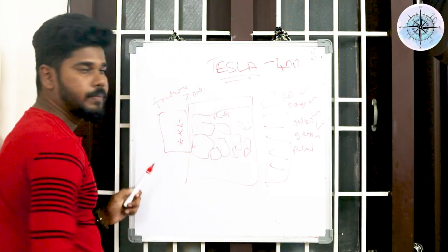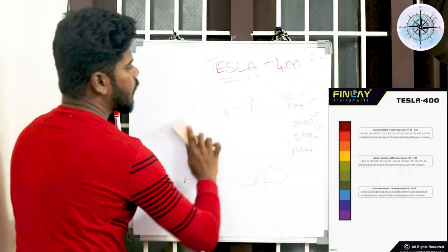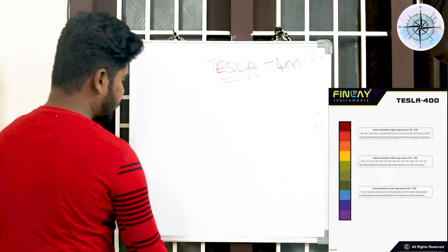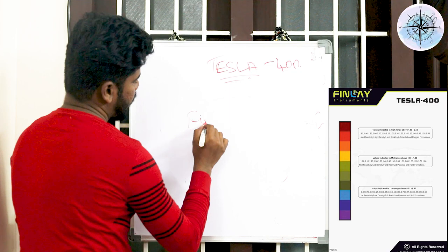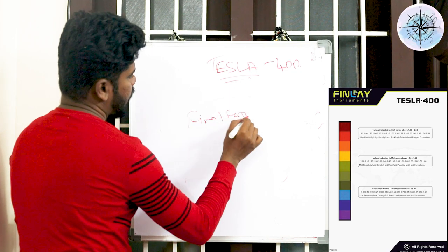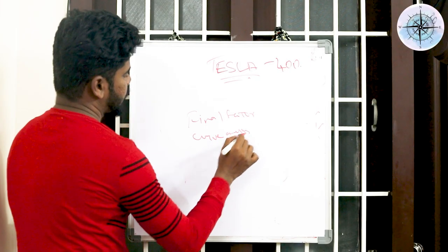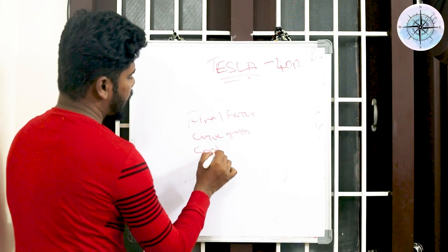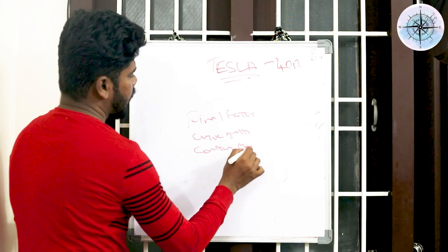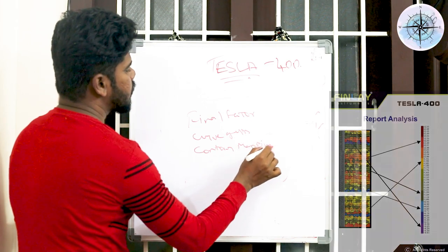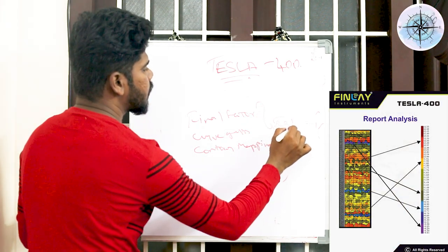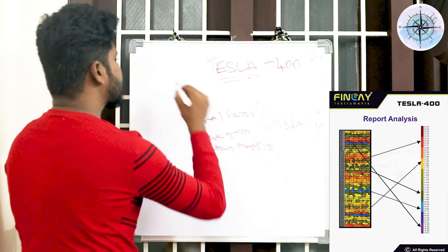So how are we going to calculate? Now we are going to calculate with the final factor, and then the curve graph, and then contour mapping.